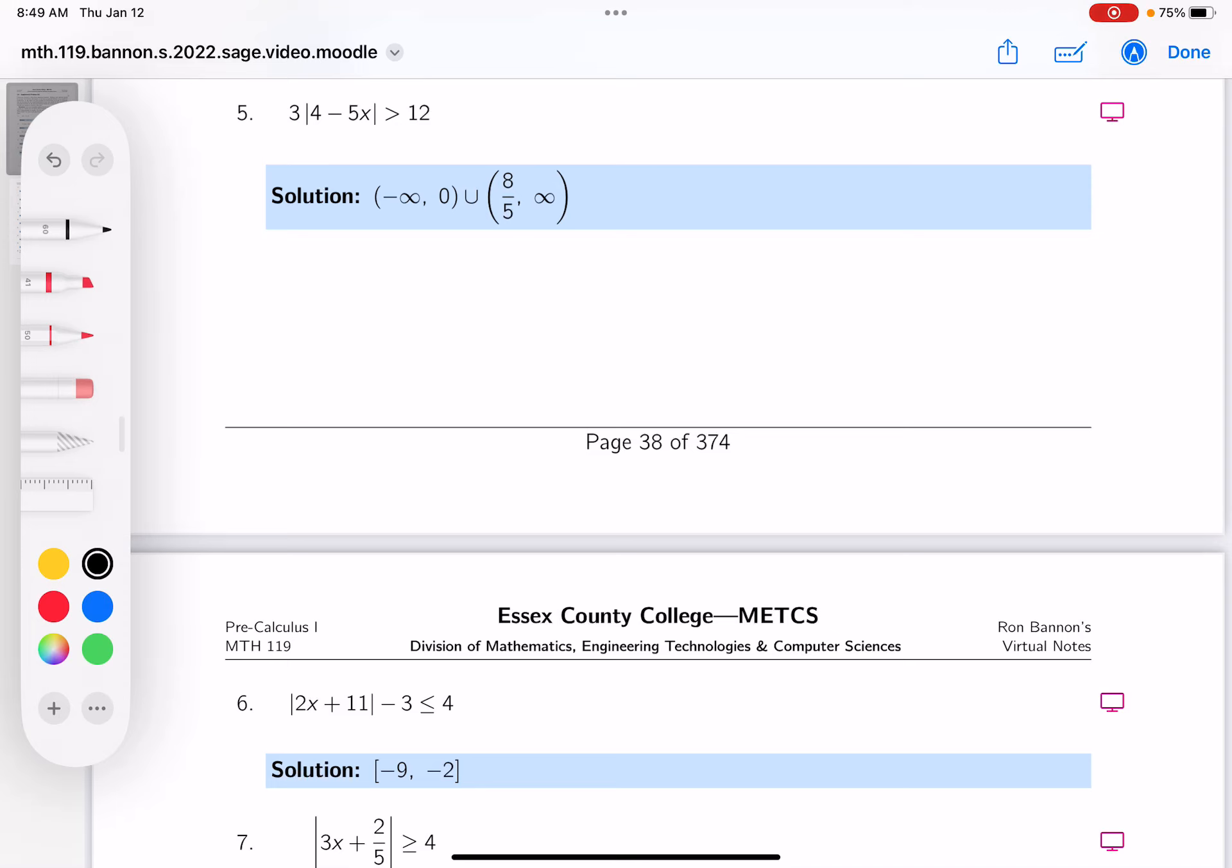Okay, I would rewrite it by dividing both sides by 3. I want to get that absolute value alone. So I get 4 minus 5x, and that's greater than, if I divide both sides by 3, by 4.